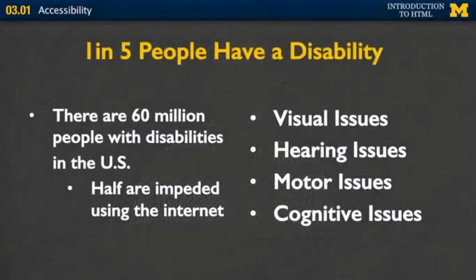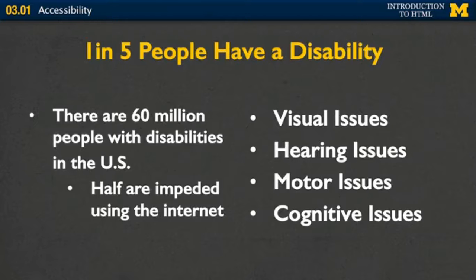So let's talk specifics. According to the 2012 U.S. Census, one in five people in the U.S. have a disability. That means there are 60 million people in the U.S. who are dealing with issues that other people may not have, and half of them are impeded from using the Internet. We will talk briefly about four issues that tend to pop up the most when dealing with disabilities and the Internet: visual issues, hearing, motor, and cognitive.